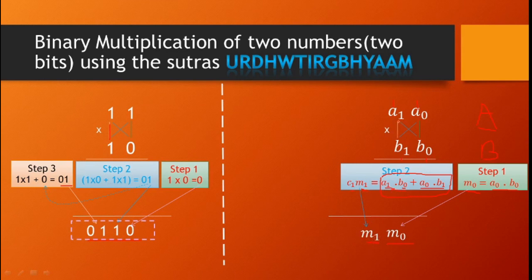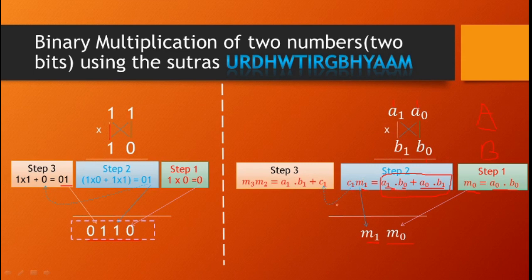Step 3 is the left-hand side digit multiplication: A1 into B1, plus the carry C1 from Step 2. Again we use a half adder. The sum is taken as M2 and the carry as M3 — both are the final digits of the result. So M3 and M2 are placed in the final result.